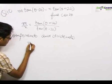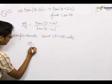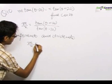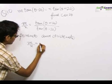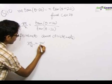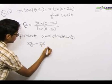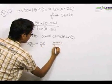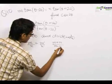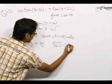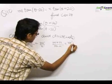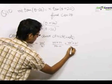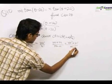Componendo-dividendo says: if m upon n is equal to m-dash upon n-dash, then m plus n upon m minus n is equal to m-dash plus n-dash upon m-dash minus n-dash.